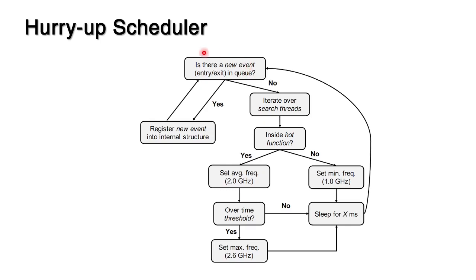The algorithm uses a threshold approach. You can stop the video to check the algorithm details. The basic idea is: if a thread enters the hot function, we keep monitoring it. If after a certain time — about 300 milliseconds — it is still executing that hot function, we consider it a heavy thread and set the frequency to maximum. Otherwise, it stays at 2.0 GHz.